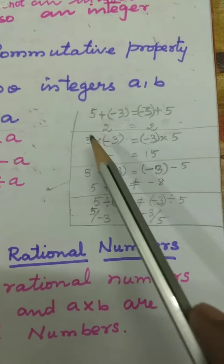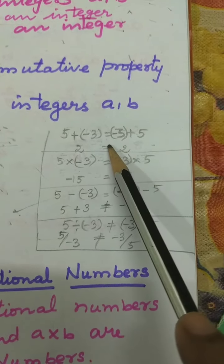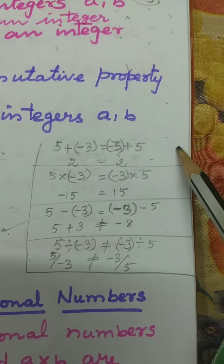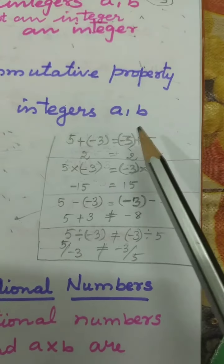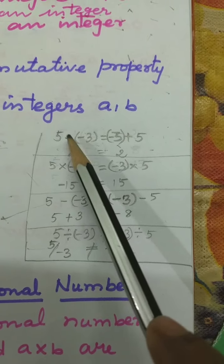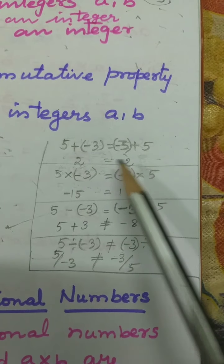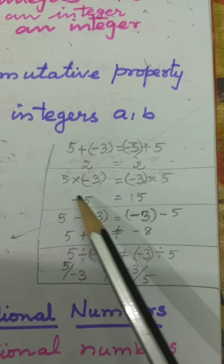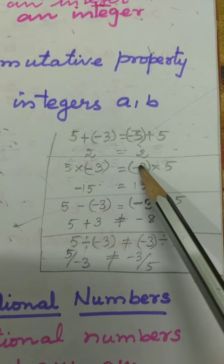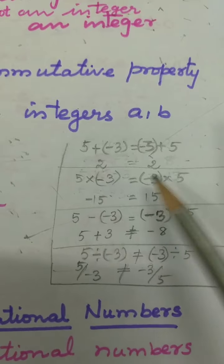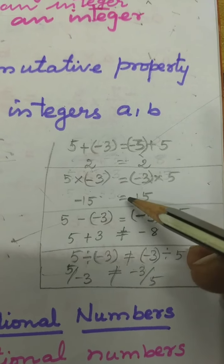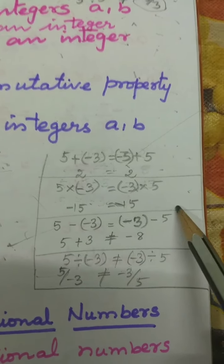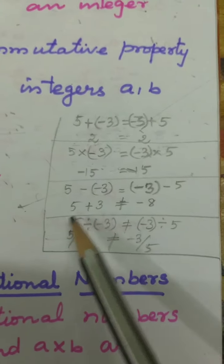Let us see some examples. 5 plus minus 3 is equal to minus 3 plus 5. Both are equal — the answer is 2 here and 2 here also. So addition is true in commutative. For multiplication: 5 into minus 3 is equal to minus 3 into 5. Both are minus 15 and minus 15, so multiplication is also commutative.